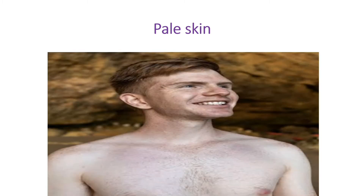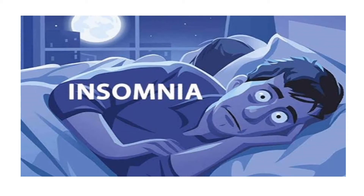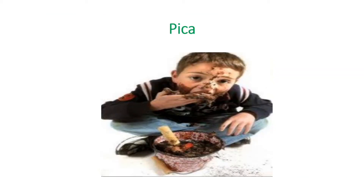Dizziness is a common complaint in which you feel that you or your surrounding is spinning around. Suddenly you may feel pallor of the skin, or your skin becomes more light and bright than before. Leg cramps may be present usually during sleep or after a walk. Insomnia — a common complaint of sleeplessness. Pica is nothing but craving for abnormal substances for eating like charcoal, chalk, paste, mud, and sometimes even raw rice.